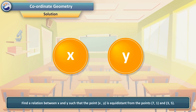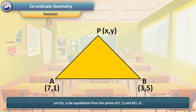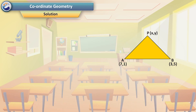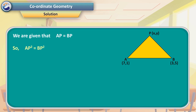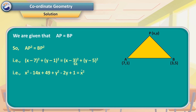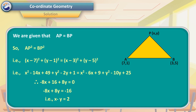Find a relation between x and y such that the point (x, y) is equidistant from the points (7, 1) and (3, 5). Solution: We are given that AP = BP, so AP² = BP². That is, (x − 7)² + (y − 1)² = (x − 3)² + (y − 5)². Expanding and simplifying gives x minus y = 2, which is the required relation.